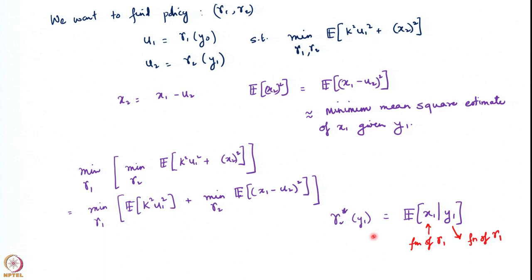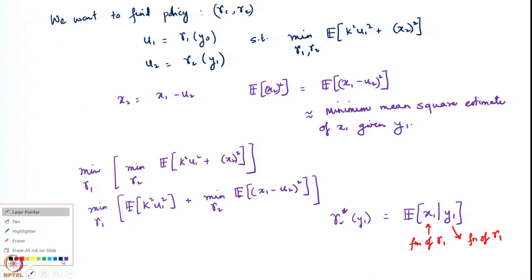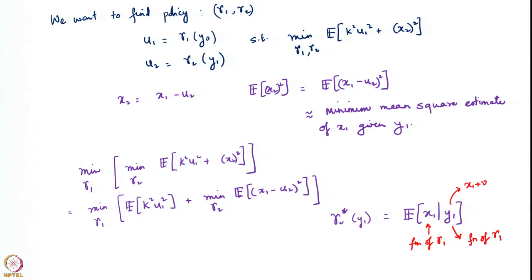Gamma_2 star, remember, we realized is actually nothing but the conditional expectation of x_1 given y_1, where x_1 was the state at time 1 and y_1 is nothing but x_1 plus v. So really all you are doing here is estimating x_1 from x_1 plus v.